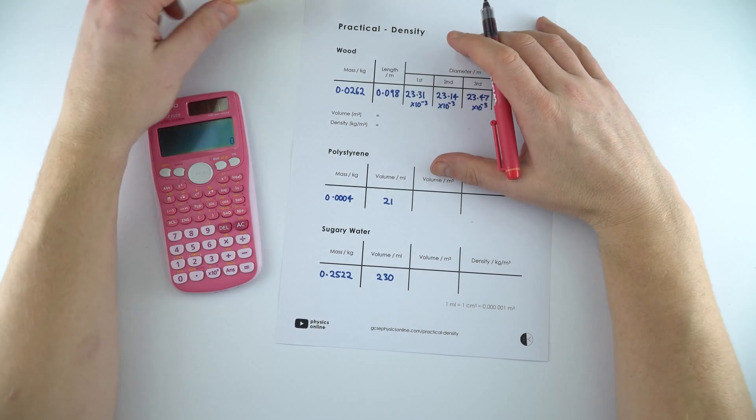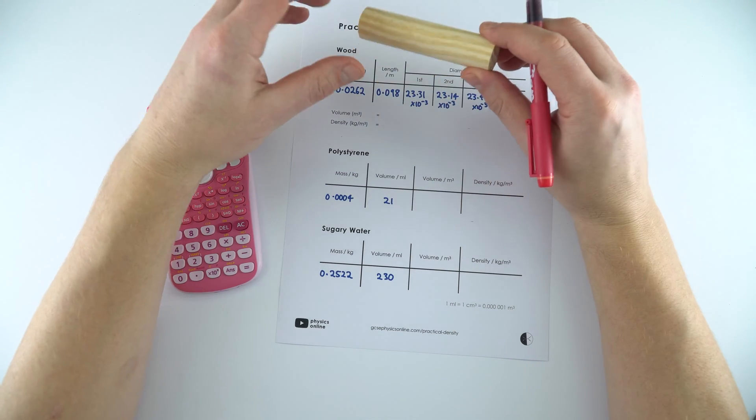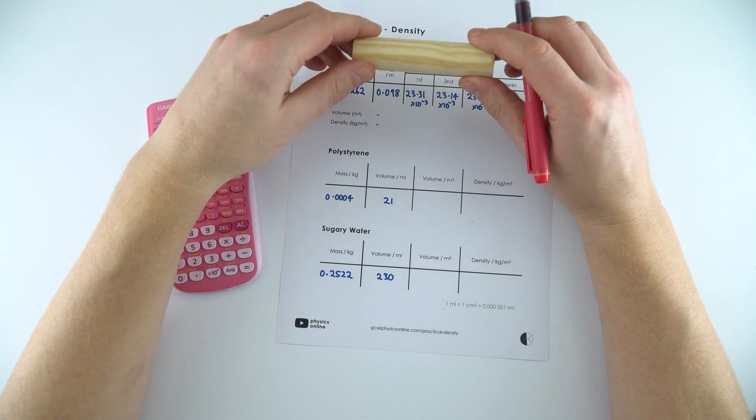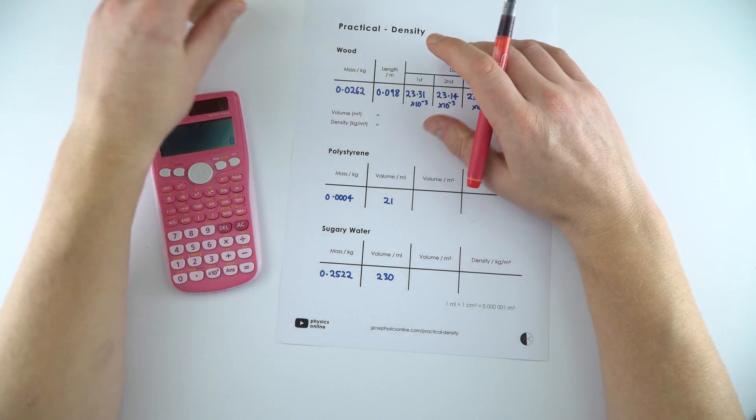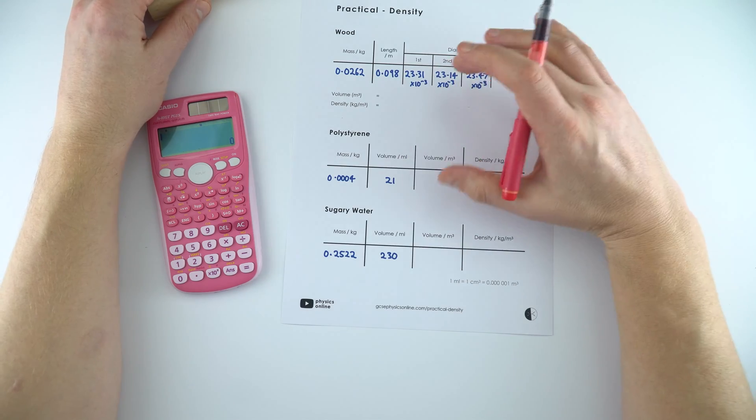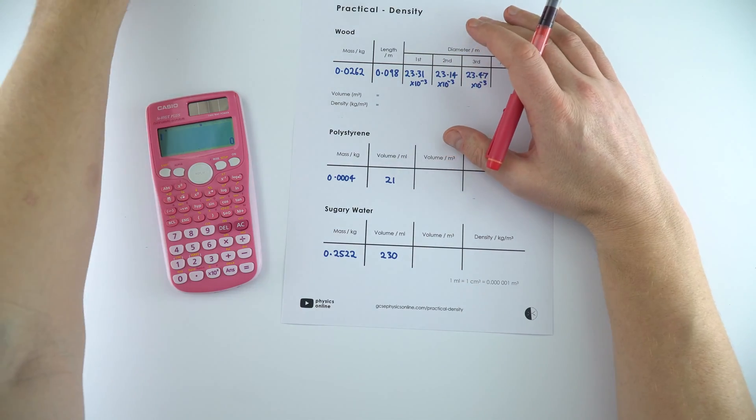So these are the results that we took when we looked at the density of different objects. Now what we're going to be doing is developing our math skills where we're going to be calculating the volume of a cylinder, and then we're going to be doing some unit conversion and maybe using standard form as well.